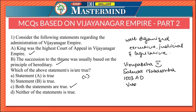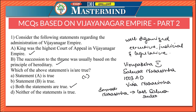In 1503 AD, Vira Narasimha, the founder of the Tulva dynasty, was the commander-in-chief of the last Saluva ruler, Imadi Narasimha. Vira Narasimha usurped the throne, thus laying the foundation of the Tulva dynasty. So though succession was usually hereditary, there were usurpations to the throne at certain points in Vijayanagar history.